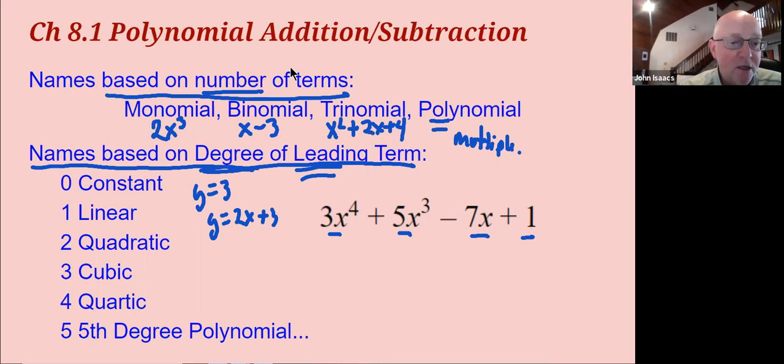Now, notice it graphs like a line. We know that y equals 2x is like a line. So we call that a linear polynomial, a linear function.